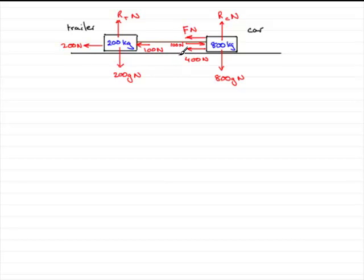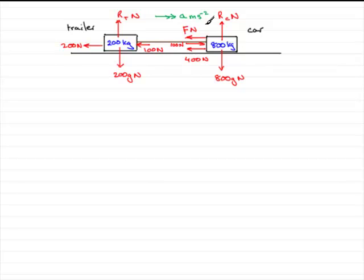The car is decelerating — it's going to be slowing down. We don't know what that deceleration is, so I'm just going to call it A again — A meters per second per second. It's not the same A as we had in the first part of the question.